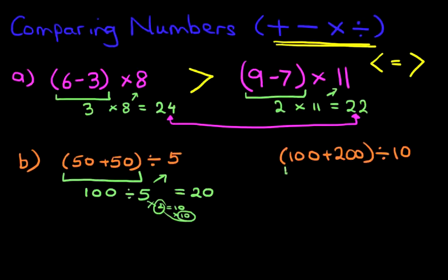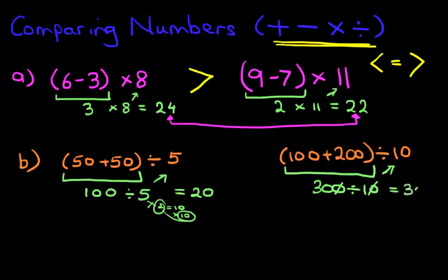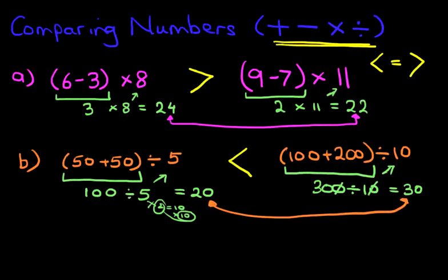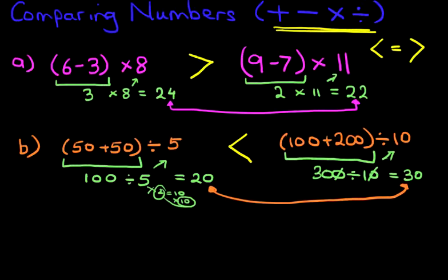On the right hand side we've got 100 plus 200, that is 300. Then we do the next bit: 300 divided by 10. What is 300 divided by 10? Dividing by 10 is easy — just cross out the zeros. The answer is 30. So we are now comparing 20 and 30. Which number is smaller? The arrow is going to point to the smaller number — it is 20. That was, again, nice and easy.